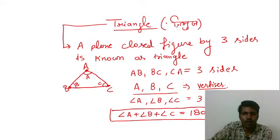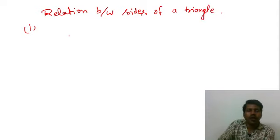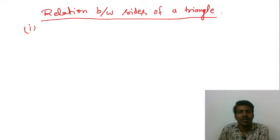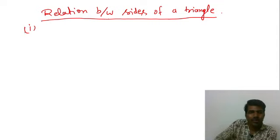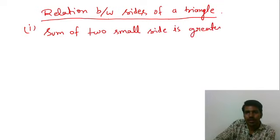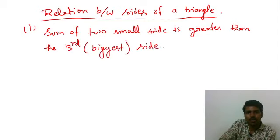अब बात करते हैं, भुजाओं में relation. First condition. Relation between sides of a triangle. It means to form a triangle, there are certain conditions like sum of two small sides is greater than the third side. Third means biggest, biggest side.